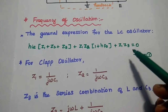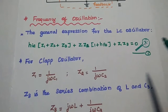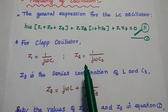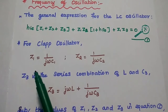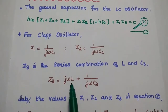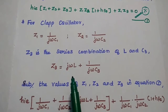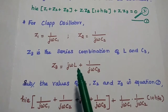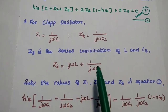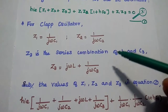For the CLAP oscillator, Z1 = 1/(jωC1) and Z2 = 1/(jωC2). Z3 represents the series combination of L and C3, so Z3 = jωL + 1/(jωC3). These are the Z1, Z2, and Z3 values for the CLAP oscillator.